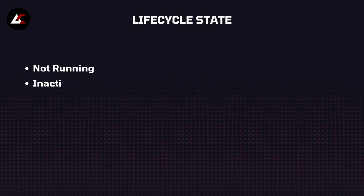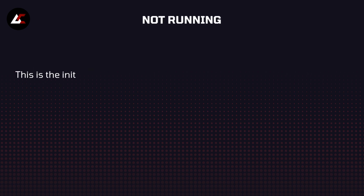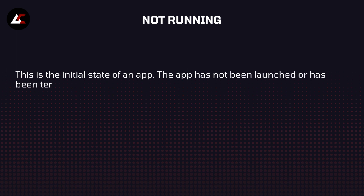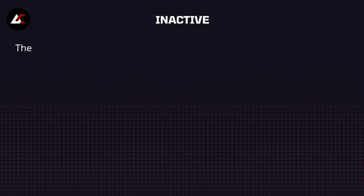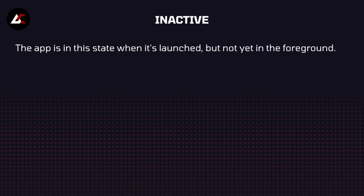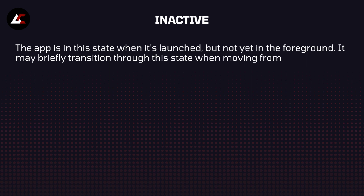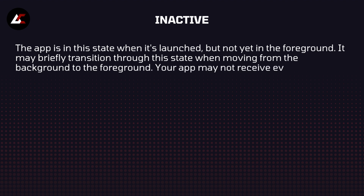Life cycle states are: not running, inactive, active, background, and suspended. Not running — this is the initial state of an app; the app has not been launched or has been terminated by the user or the system. Inactive state — when the app is launched but not yet in the foreground, it may briefly transition through this state when moving from the background to the foreground. Your app may not receive events during this state, but it is not suspended.